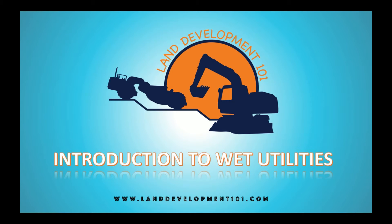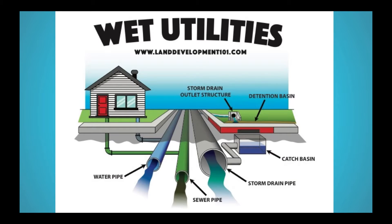So what are the wet utilities exactly? The wet utilities is the installation of the sewer pipe, the storm drain, and the water.